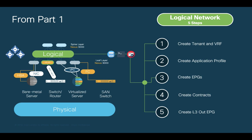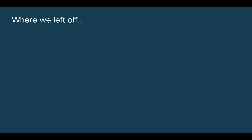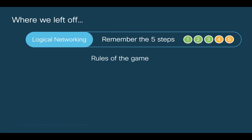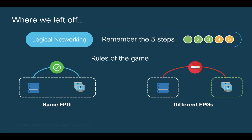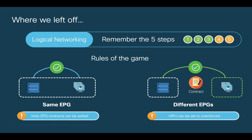In Part 1 of this chapter we covered the first three steps in order to configure the logical network in ACI. Now we will cover contracts and an overview of L3OUT EPGs. Remember the fundamental rules of the game: same EPG, communication is allowed by default; different EPGs, a contract is needed. And remember there are ways to modify this default behavior as covered in Part 1.